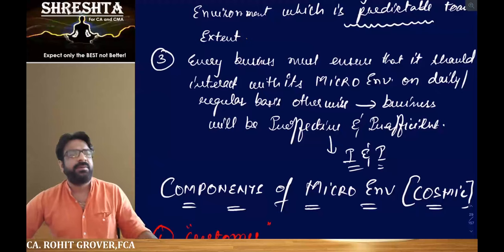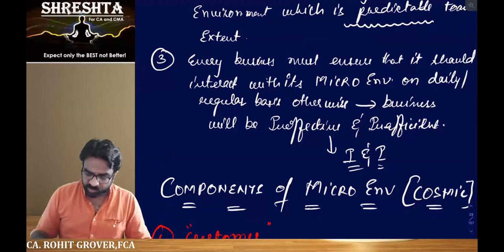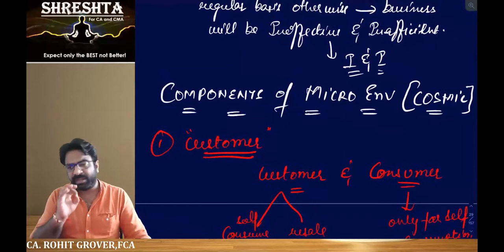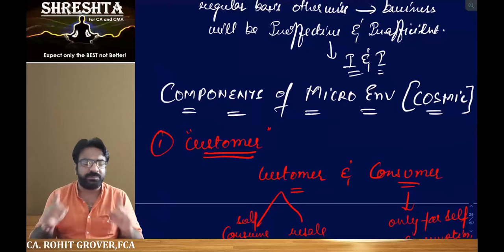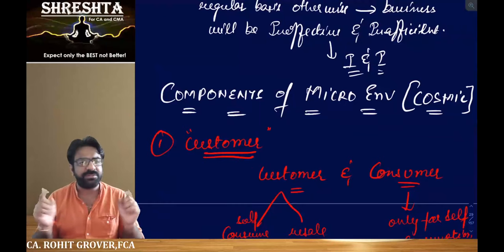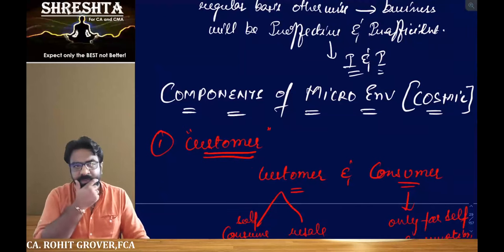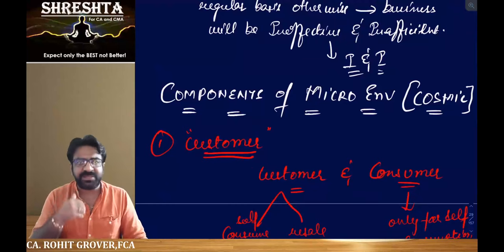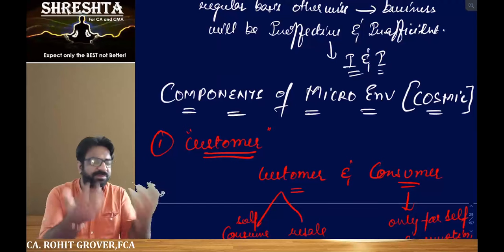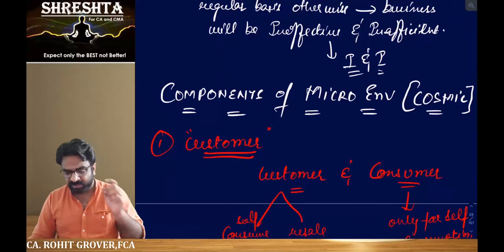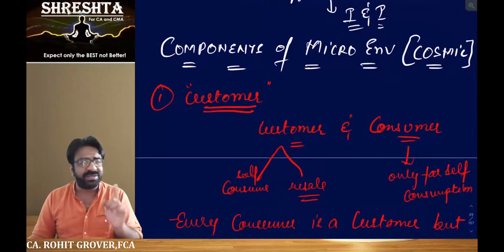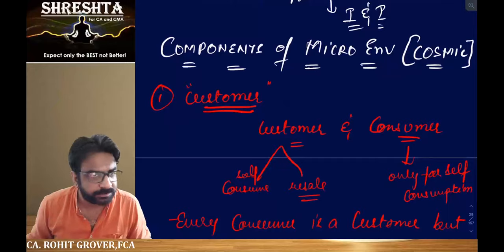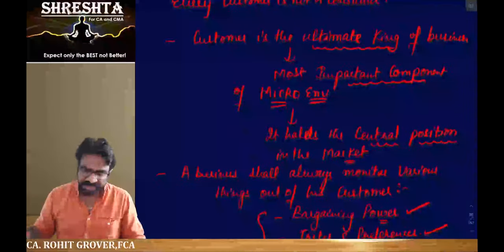In COSMIC, the first C is customer. A consumer is one who buys goods only for self-consumption, whereas a customer is one who may buy goods for self-consumption as well as for resale purposes. Every consumer is a customer, but every customer need not be a consumer. The customer is the ultimate king of the business and holds the central position.